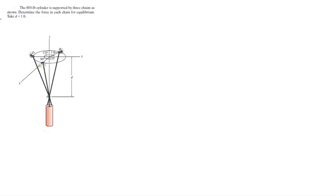For more videos visit ForTheSakeOfEducation.com. Alright guys, let's do this problem where you have an 800 pound cylinder supported by 3 chains as shown. Find the force in each chain from equilibrium, take D is equal to 1 foot.